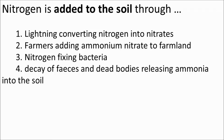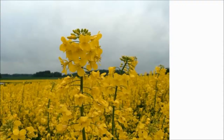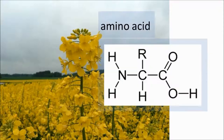So what processes remove nitrogen from the soil? Plants absorb nitrates from the soil through their roots and use these nitrates to build proteins. This is an amino acid — the building block of proteins. You can see in this diagram that nitrogen is needed to build an amino acid and therefore a protein.